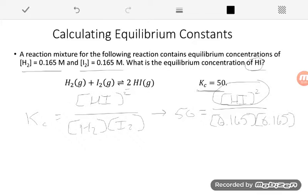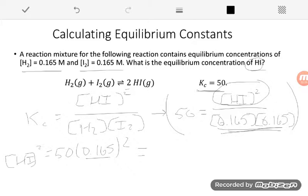First, multiply both sides by the denominator to get rid of it. So HI squared equals 50 times 0.165 times 0.165. I'll simplify this as 50 times 0.165 squared. Doing the math, that equals 1.36125.